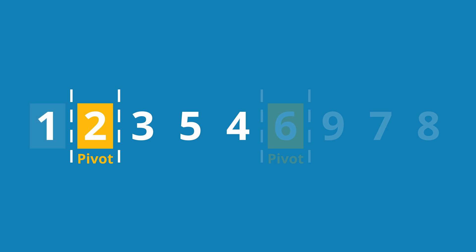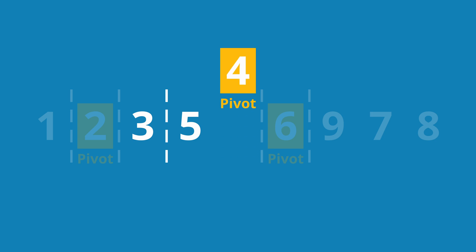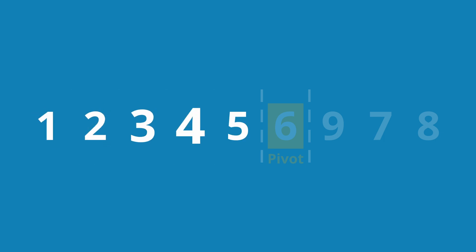The left subpartition contains only the 1 and is therefore considered sorted. In the right subpartition, we again select the pivot element, the 4. We search from the left for the first element greater than or equal to 4, that is the 5. This brings us to the right edge, so we don't have to search from the right. Since the 5 is greater than the pivot element, we draw the separator to the left of it. We swap the pivot element with the left element and separate the section to the right. Now in the entire left partition, we have only pivot elements and subpartitions containing only a single element. The left partition is now fully sorted.